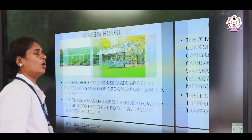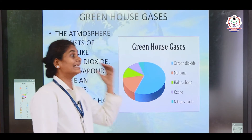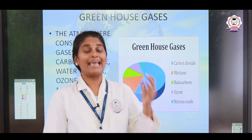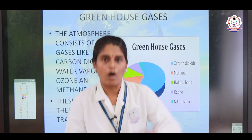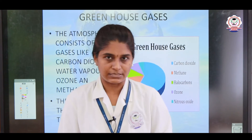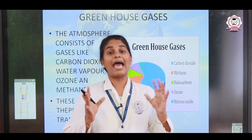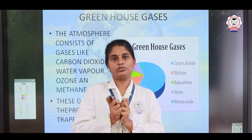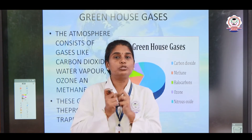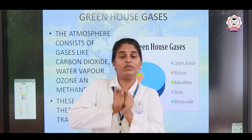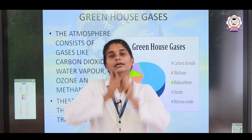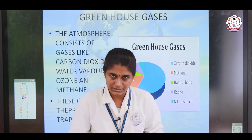Why is it called a greenhouse? There are some gases present in the atmosphere that keep the atmosphere warm — these are called greenhouse gases. They have the property of trapping heat; they absorb heat and withhold it. Because of the greenhouse gases, the earth is warm. Without the greenhouse gases, the earth would become very cold where we cannot live — it would become like a freezer box.